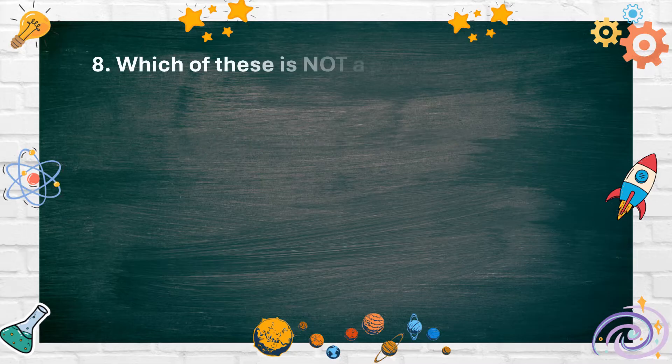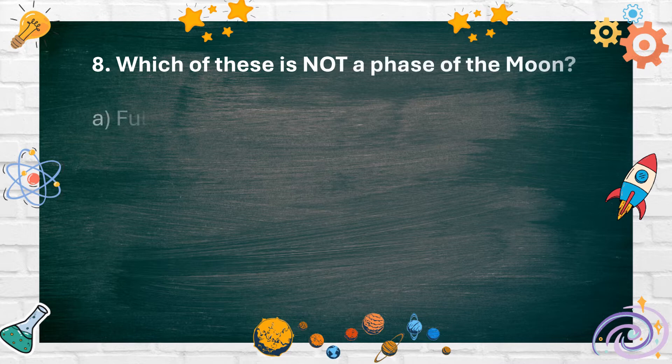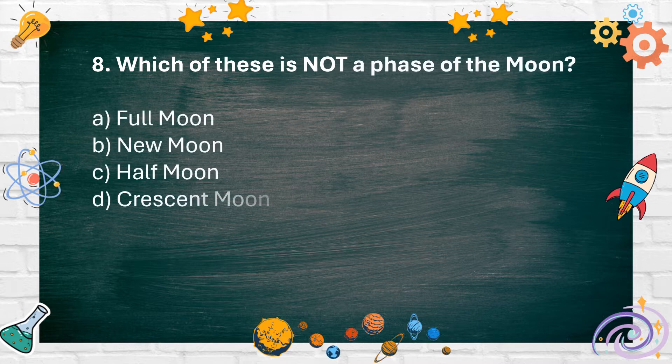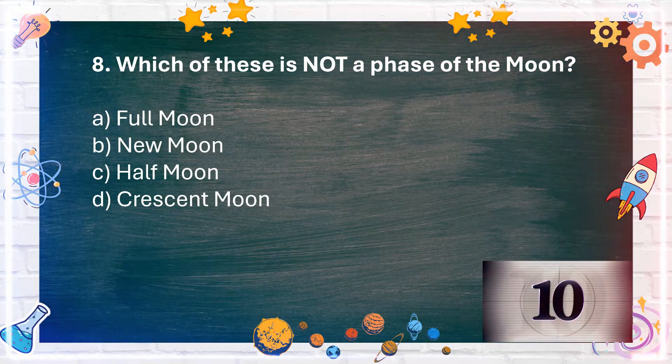Number 8. Which of these is not a phase of the moon? A. Full moon. B. New moon. C. Half moon. D. Crescent moon.